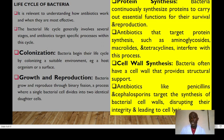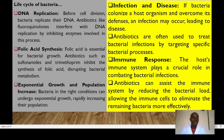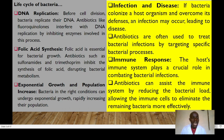In cell wall synthesis, bacteria have a cell wall made up of peptidoglycan, which provides structural support. Antibiotics such as penicillins and cephalosporins target the synthesis of the cell wall, disrupting the integrity of the bacteria and leading to lysis of the bacterial cell. We also have DNA replication — before cell division, bacteria must replicate their DNA. Antibiotics such as fluoroquinolones target this stage by inhibiting enzymes involved in DNA replication.